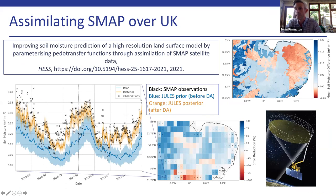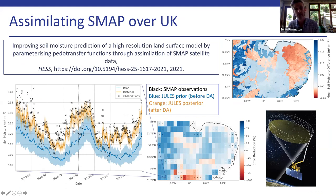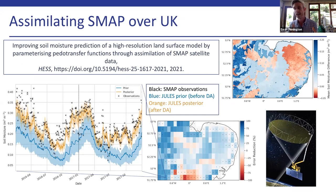We've got lots of these COSMOS probes over the UK, shown as red dots. Just to show you for one grid cell: the prior prediction from JULES is the blue line, the posterior is orange, and we're fitting those SMAP observations much more closely with our optimized parameters. In this case we're optimizing the soil parameters of the JULES model through pedotransfer functions and a soil dataset — the details are all in the paper.